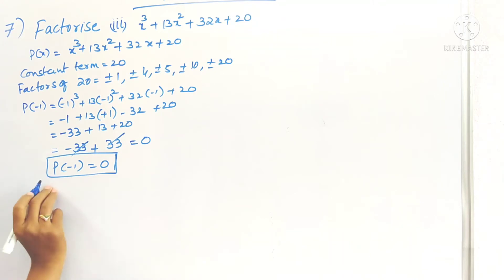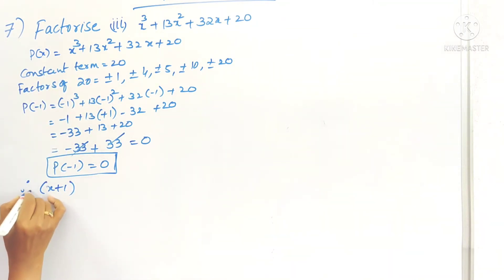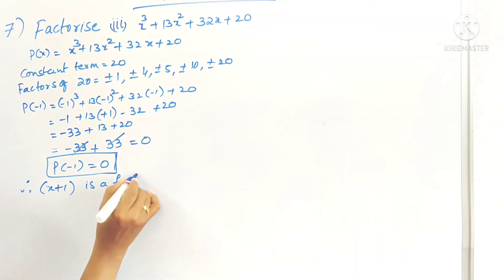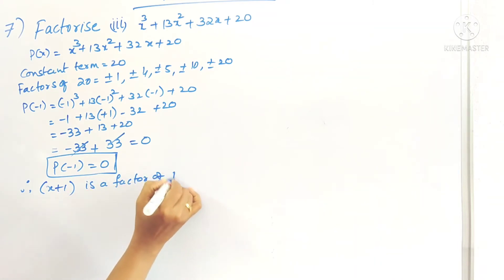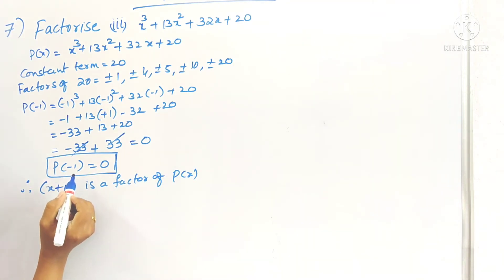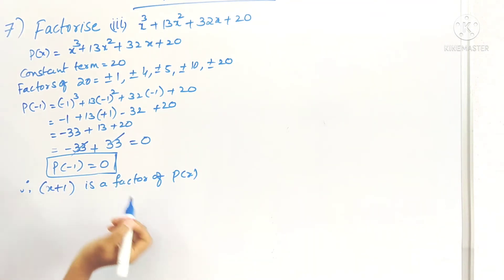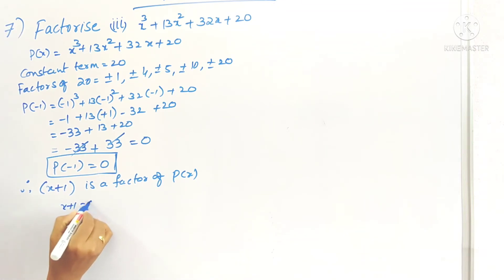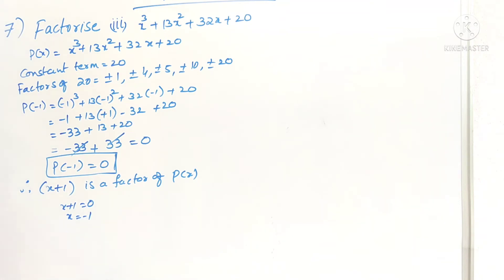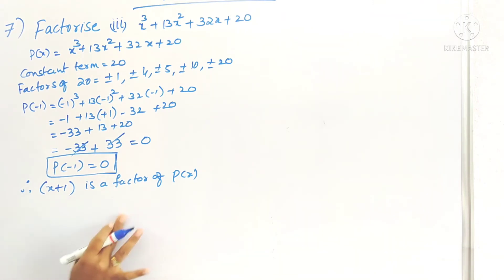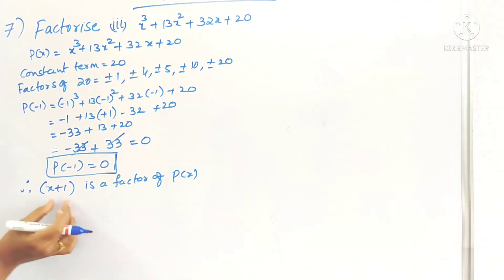Since the remainder is 0, x + 1 is a factor of the given polynomial p(x). Note that substituting x = −1 gives p(−1) = 0, and when x + 1 = 0, x = −1. So if p(−1) = 0, then x + 1 is a factor. We have found one factor; we need to find the remaining two.